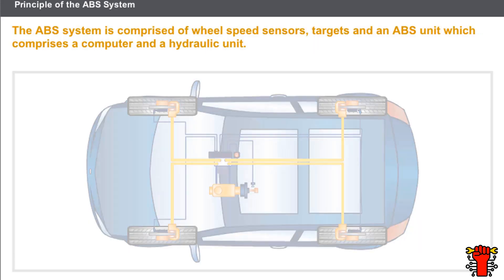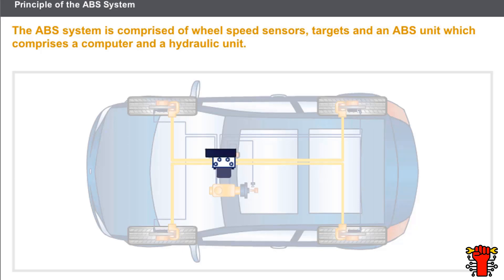The ABS system comprises the following elements: wheel speed sensors, targets, and an ABS unit. This ABS unit comprises a computer, a hydraulic unit, and a motor driving a hydraulic pump.